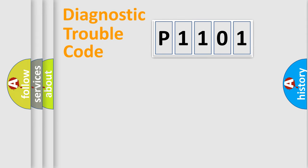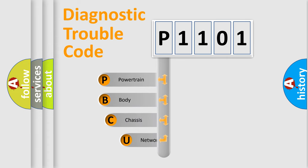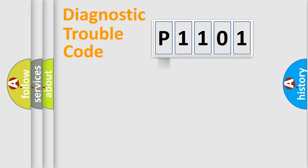Let's do this. First, let's look at the history of diagnostic fault code composition according to the OBD2 protocol, which is unified for all automakers since 2000. We divide the electric system of an automobile into four basic units: Powertrain, Body, Chassis, and Network.